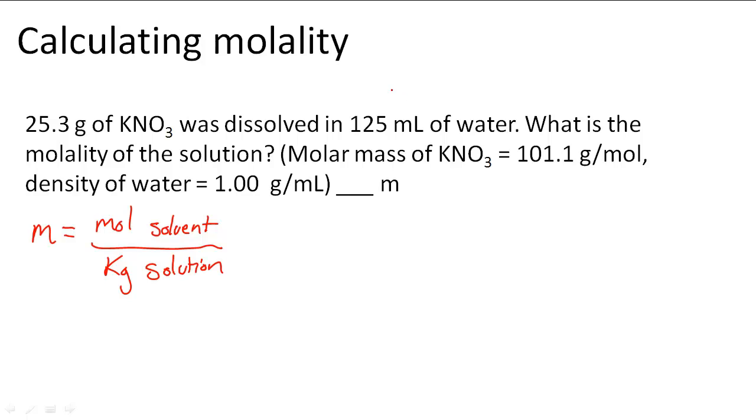The solution, which is the water, we have to figure out the kilograms. We have 125 milliliters and a density of 1 gram per milliliter, which means every milliliter equals 1 gram of water. That translates to 125 grams of H2O. Converting to kilograms gives us 0.125 kilograms of H2O, which is the solution.